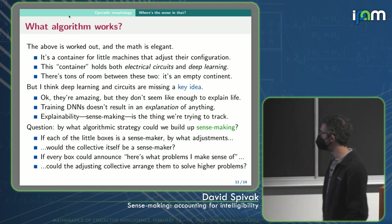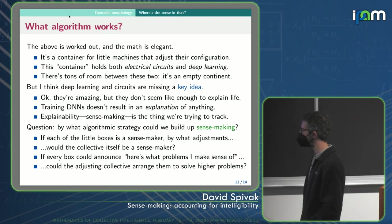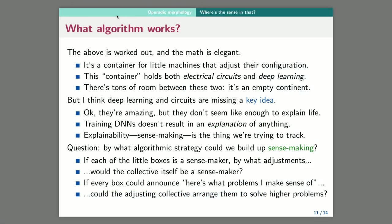So my question, maybe what I'm wondering or proposing is maybe if every box could announce, well, here's the problems I know how to make sense of. Like if you want to know about operads, come to me. If every box says, well, I know how to draw really good pictures of cats or something like that. If every box could announce what problems they know how to make sense of, could the adjusting collective arrange those pieces? I want to know by what algorithm could you arrange those pieces so that they're doing the kind of sense making they like to do, but we can arrange them to solve higher problems.